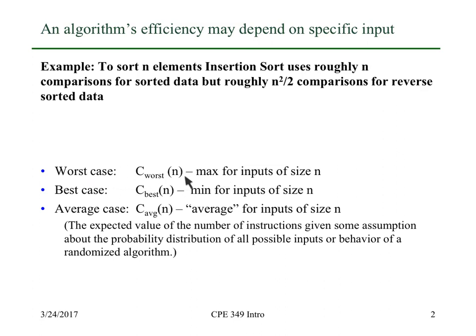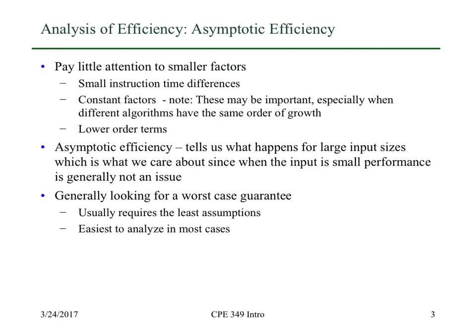To a large degree, people focus on worst case performance, because in most applications that's what you're concerned with — what's the largest amount of time you're going to have to wait until the algorithm completes? We're looking for a metric for large problems, because that's when the algorithm is likely to take a long time. So we pay little attention to factors less important for large problems: different types of instructions, constant factors, and lower order terms. For asymptotic efficiency, we care about large input sizes and generally look for worst case guarantees.